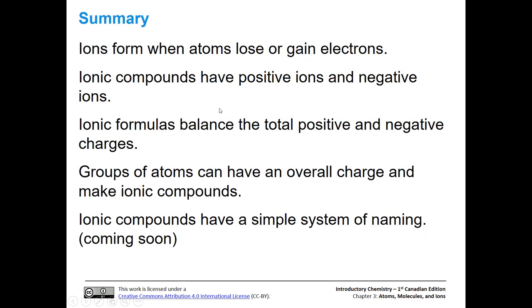In summary: ions form when atoms gain or lose electrons. Ionic compounds have a positive ion and a negative ion, and the total charge must balance — total positive charge must balance total negative charges. Groups of atoms can have an overall charge; those are polyatomic ions, which we'll talk about more later. Eventually, we're going to talk about a simple system of naming for ionic compounds — that'll be coming in future videos.